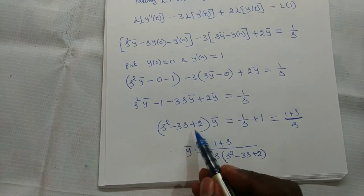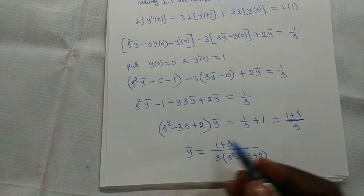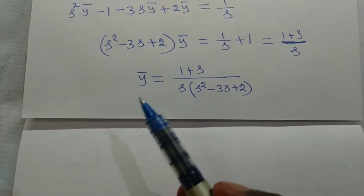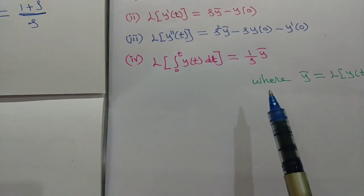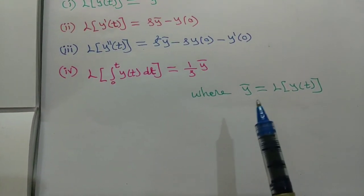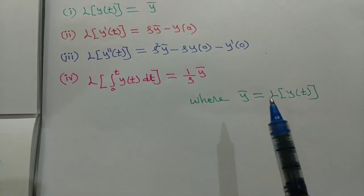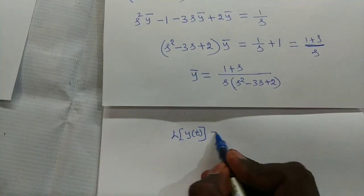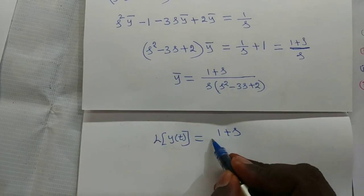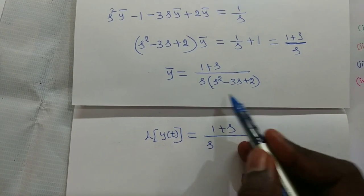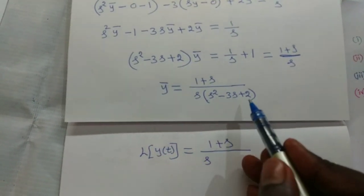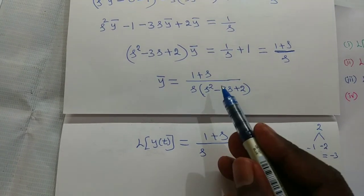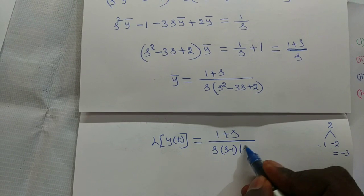Therefore y bar equals (1 plus s) divided by s times (s squared minus 3s plus 2). Since y bar equals L of y of t, we write L of y of t equal to (1 plus s) divided by s times (s minus 1) times (s minus 2), where s squared minus 3s plus 2 factorizes as (s minus 1)(s minus 2).